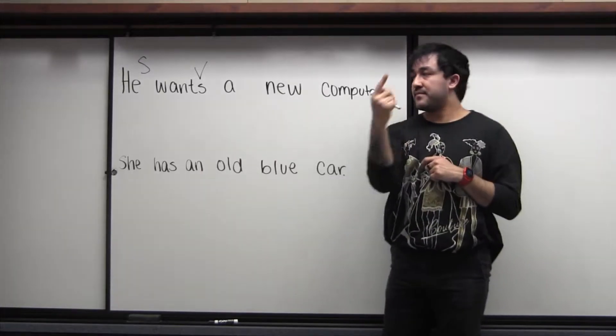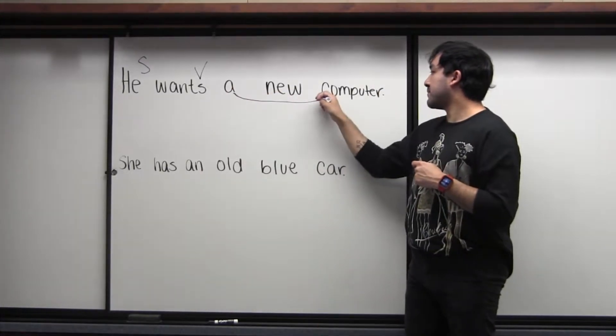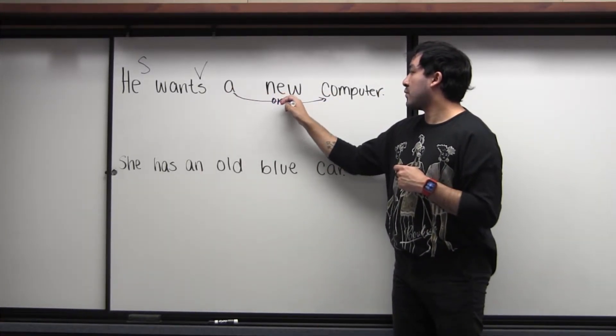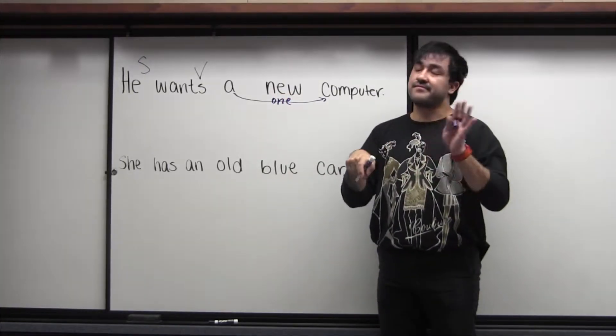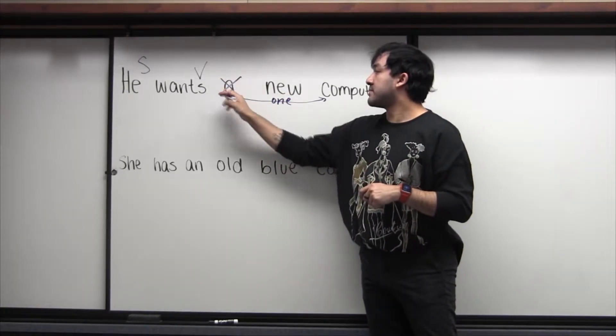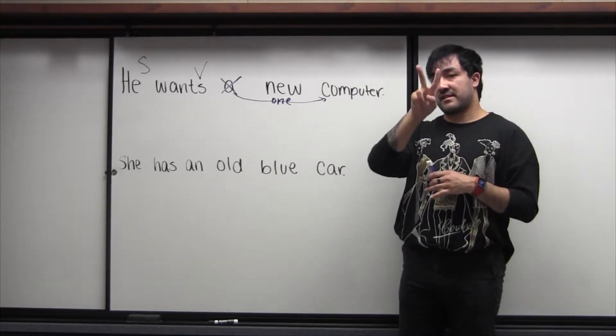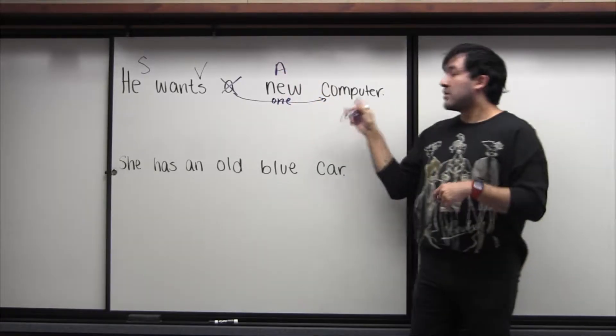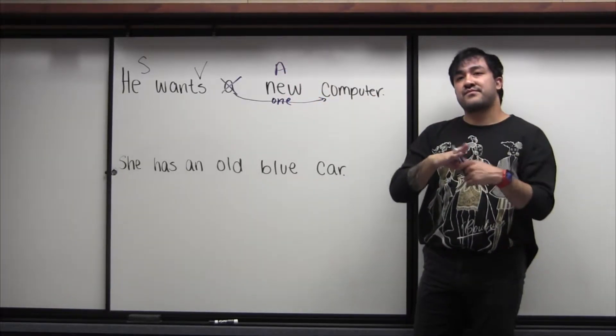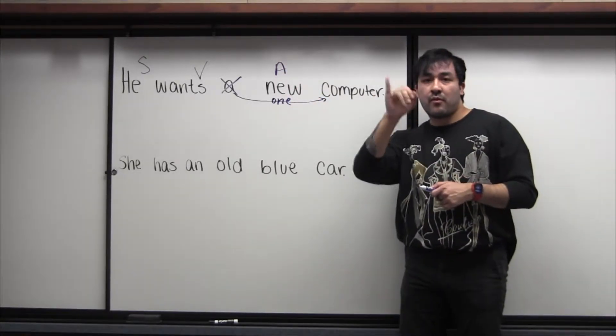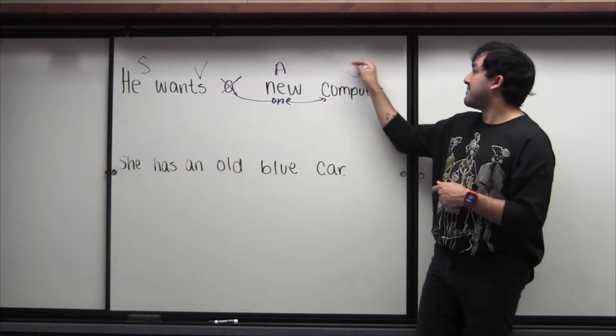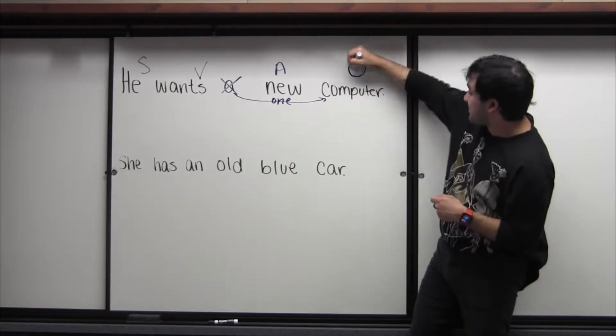Now again, A is meaning one in this sentence. A new computer, one new computer. But if you remember, we don't need it because ASL does not include articles. New, there is our adjective for today. And finally, the sign for computer, which is a noun or in this sentence, we're going to identify that as the object.